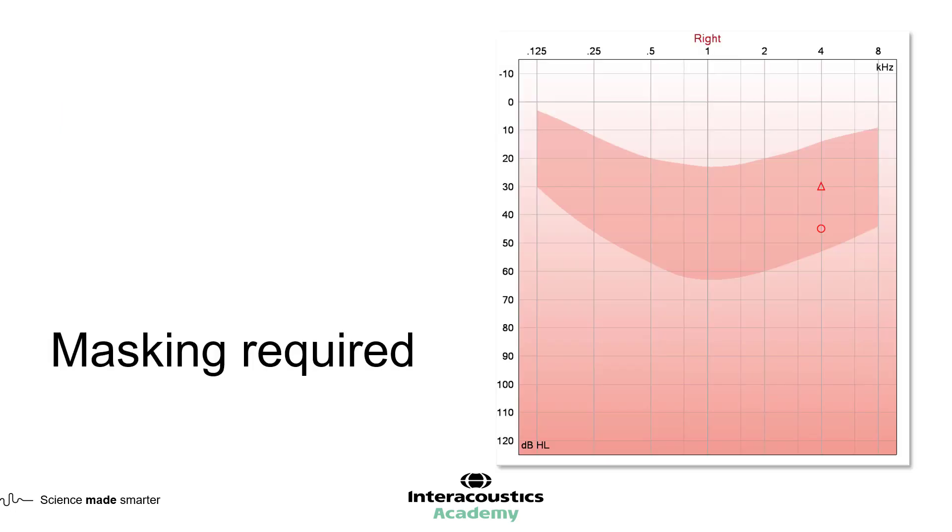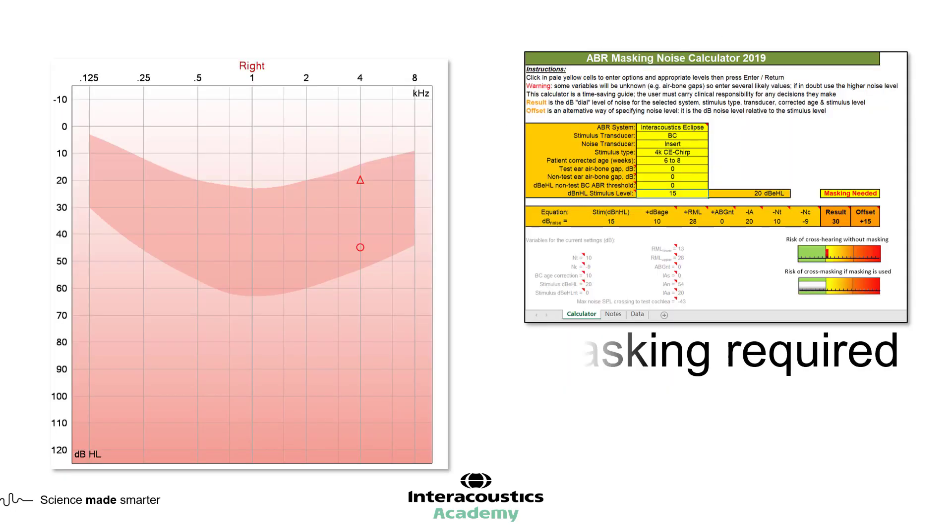However, if the not masked bone conduction testing reveals a mixed loss, or a value greater than the level of interaural attenuation, then masking noise is required, and you will need to assess the air conduction level of the opposite ear before you can apply masking.